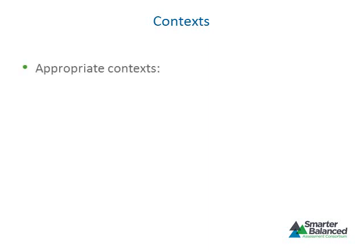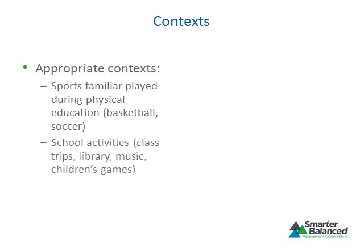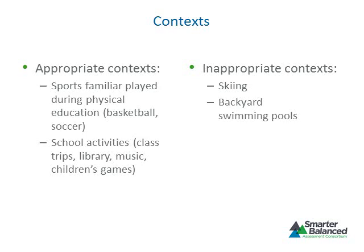Contexts of items must be appropriate for the age and experiences of elementary school students. Appropriate contexts for grades 3 through 5 include sports played during physical education, school contexts universal to all children, and school activities such as class trips, going to the library, music class, and playing games in physical education class. Inappropriate contexts include skiing, which has geographic and economic bias; swimming pools and backyards due to socioeconomic biases; earning money at a part-time job; or saving to buy a car, which are more appropriate for older students.